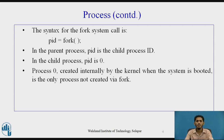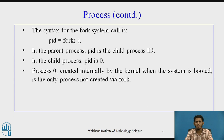Now this is the syntax for the fork system call: PID = fork(). In the parent process, PID is the child process ID, whereas in the child process, the PID is 0.